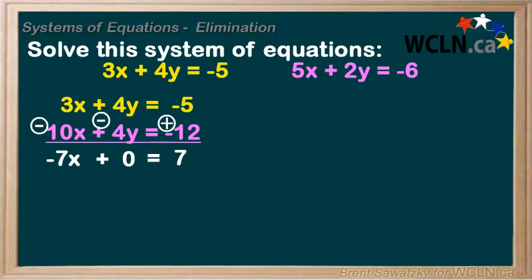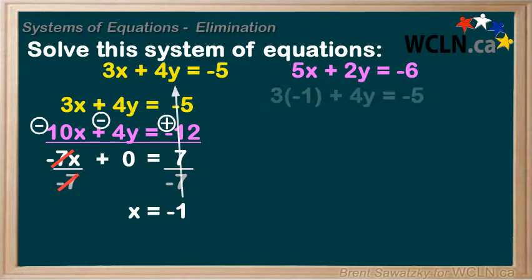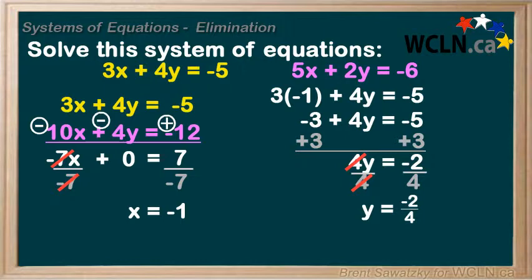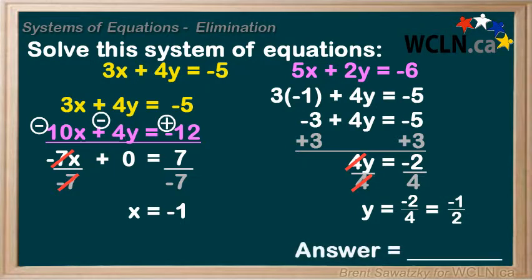We have an equation with one variable that we can solve. We see that we're multiplying by negative 7, so we divide by negative 7, and we get x equals negative 1. But we're not done — we need to solve for y to provide a complete solution. Plugging x equals negative 1 into the first equation: 3 times negative 1 equals negative 3. Add 3 to both sides: negative 5 plus 3 equals negative 2. Divide by 4: y equals negative 2 over 4, which reduces to negative one-half. So our solution is (−1, −½).